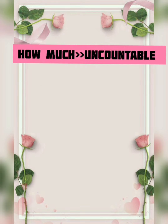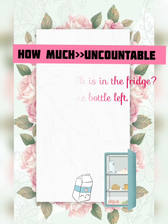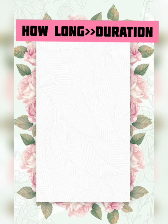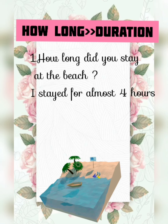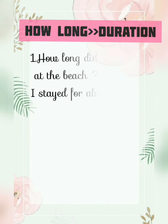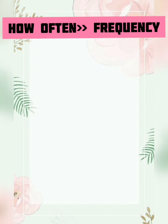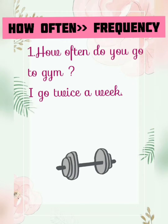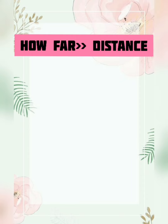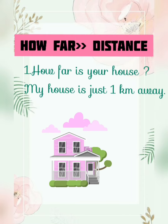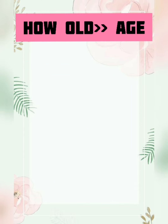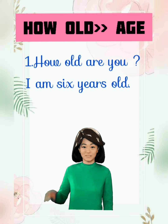How much also refers to quantity, but for uncountable nouns. Example: How much milk is in the fridge? We have just one bottle of milk left. How long is used to know the duration. Example: How long did you stay at the beach? We stayed for almost 4 hours. How often is used to know about the frequency. Example: How often do you go to gym? I go twice a week. How far is used to know the distance. Example: How far is your house? My house is just 1 km away. How old is used to know the age. Example: How old are you? I am 6 years old.